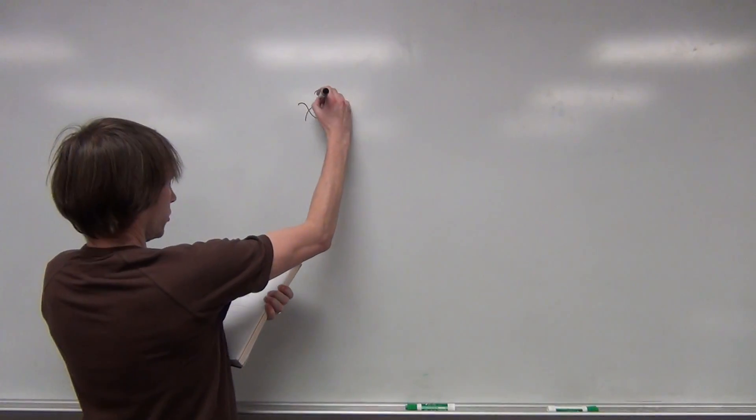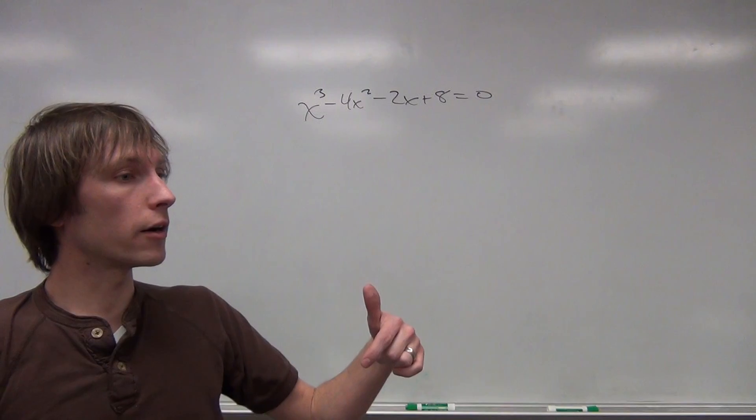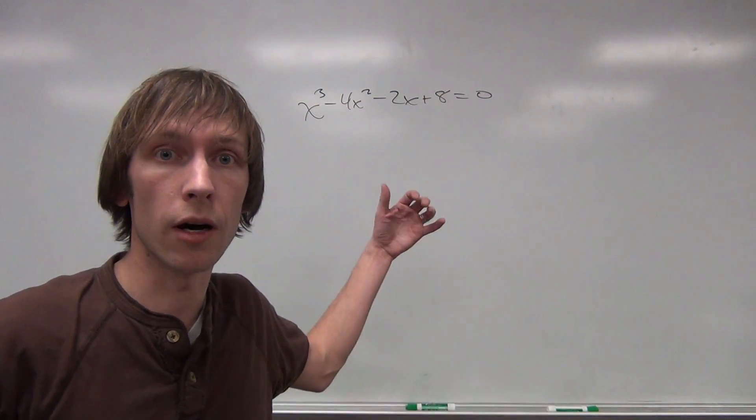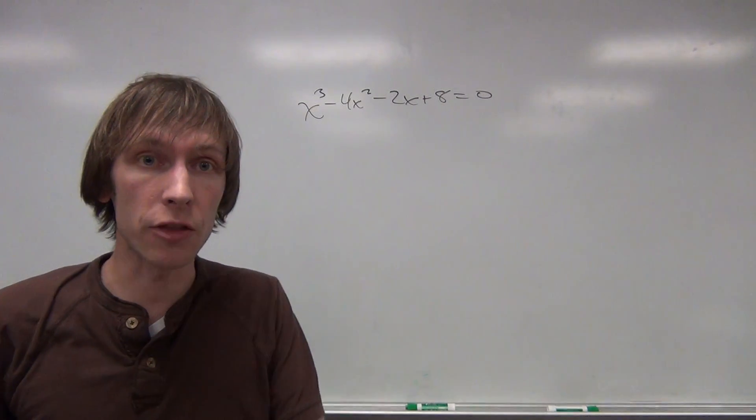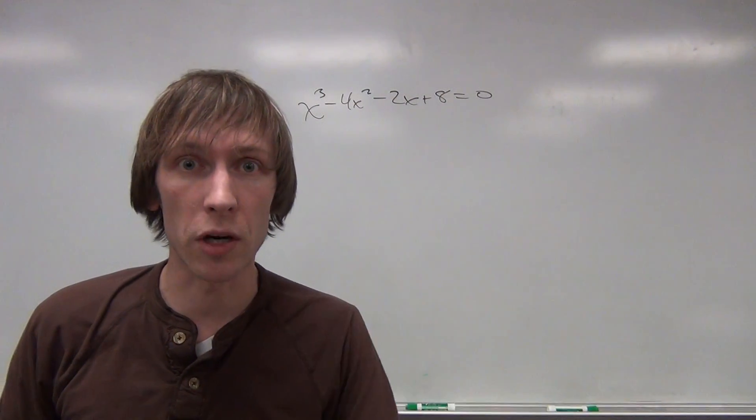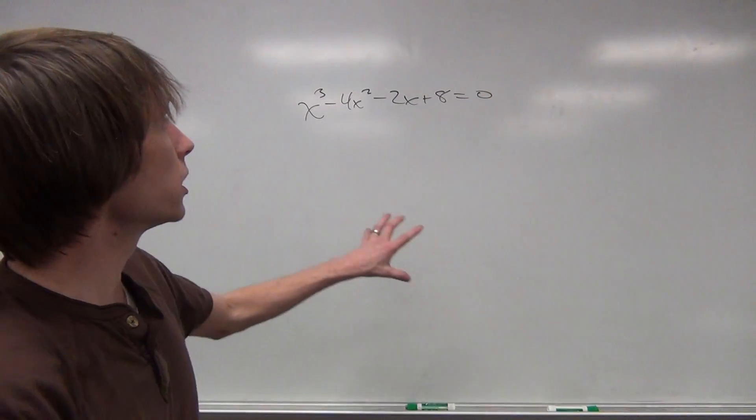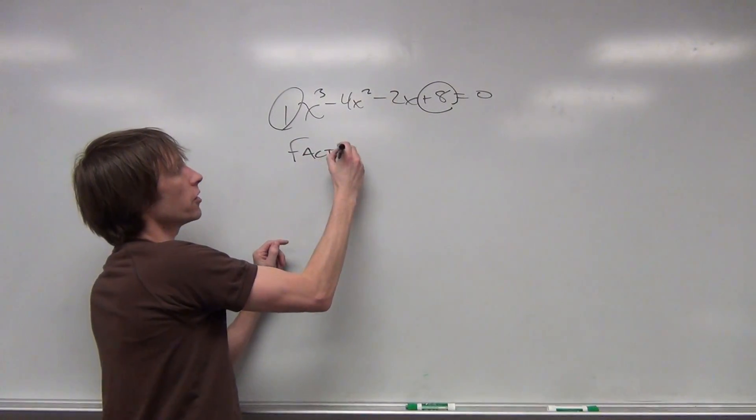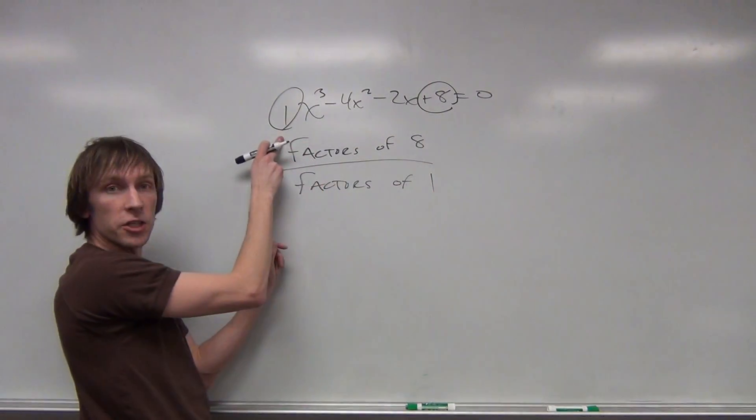Okay, so our first example. We've got x cubed minus 4x squared minus 2x plus 8 equals 0. The question phrased here is what are the possible rational roots? We care about rational roots because they're easy to find on the graph. We look at the constant and we look at the lead coefficient here, which in this case is a 1.